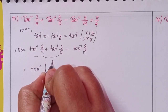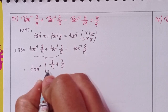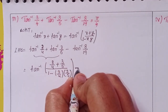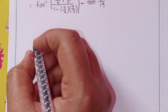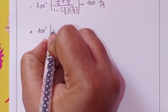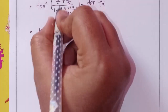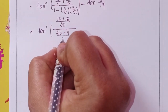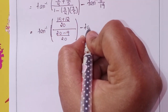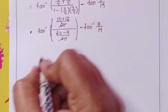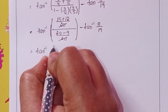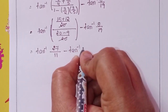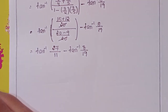Cross multiplication: 15 plus 12 in numerator, 20 minus 9 by 20 in denominator, minus tan inverse 8 by 19. These cancel, giving tan inverse: 15 plus 12 is 27 by 11, minus tan inverse 8 by 19.